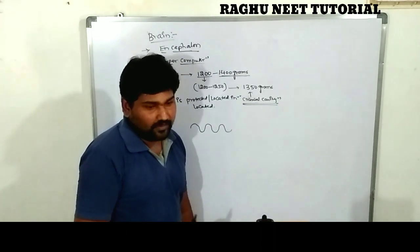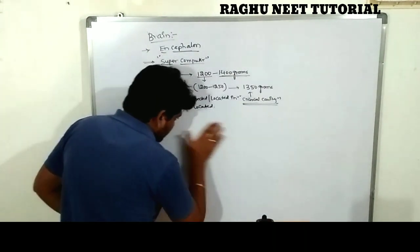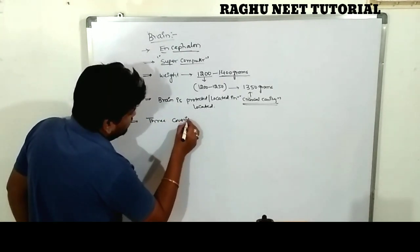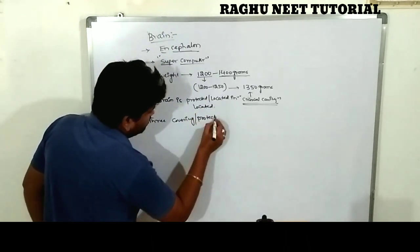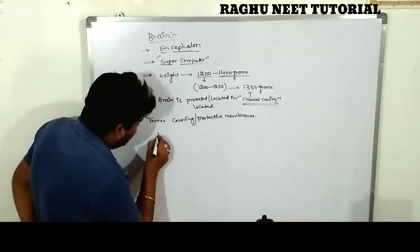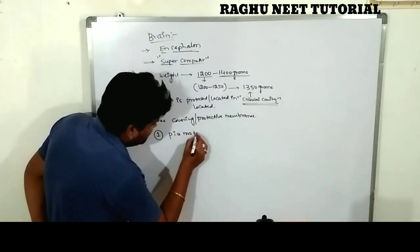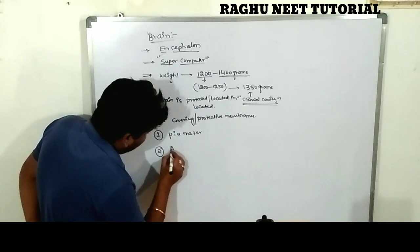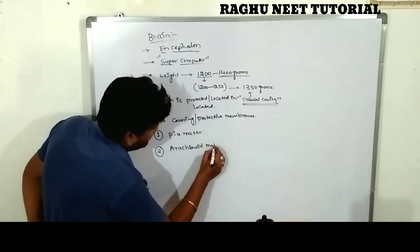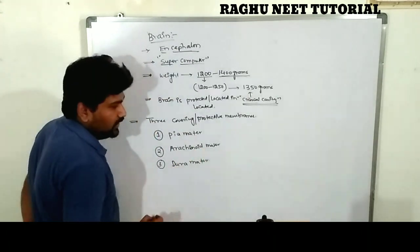The brain is completely covered by three covering membranes. The three protective membranes are: first, pia mater; second, arachnoid mater; and third, dura mater.